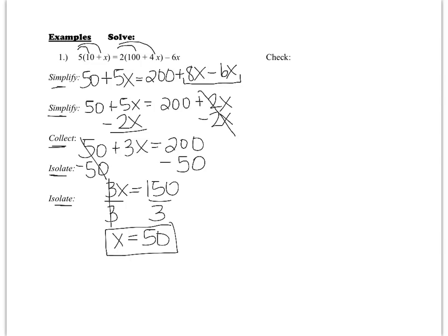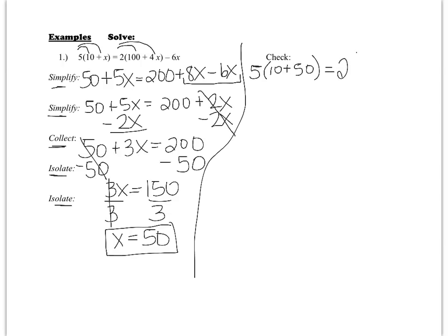Now we need to check. I take 50 and plug it back into the original equation. You can't use your simplified equation because if you made a mistake while simplifying, you might not catch it. Always plug back into the original. Checks can be tricky, so take it one step at a time. I rewrite the problem with 50 in for x: 5(10 + 50) = 2(100 + 4×50) − 6×50.